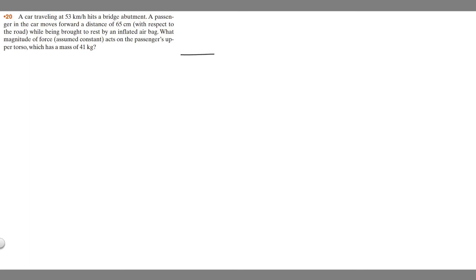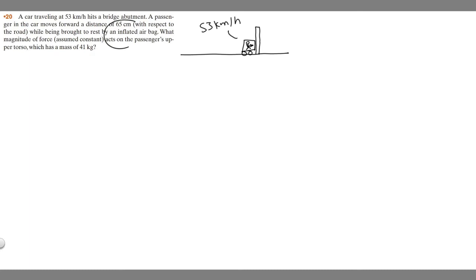So let's draw what's going on. We've got this guy in this car — this is going to be the car — and we know this car is going to hit this abutment, so let's just say it's going to hit this wall. We know the car is going to be traveling 53 kilometers per hour, and the person inside is going to be moved 65 centimeters by the airbag. I'm going to label it as delta x because its change in x position is 65 centimeters.